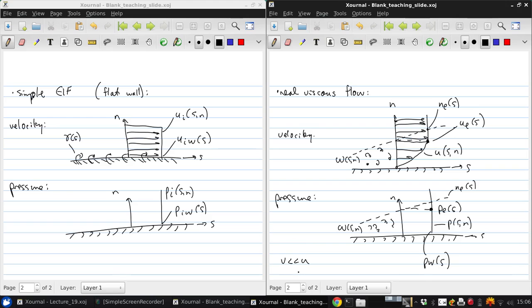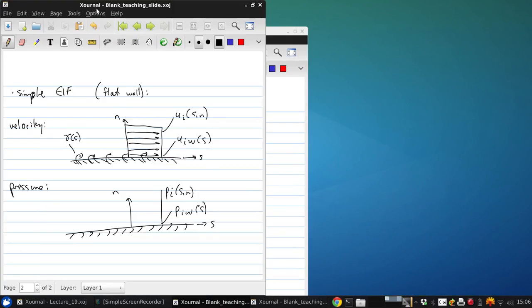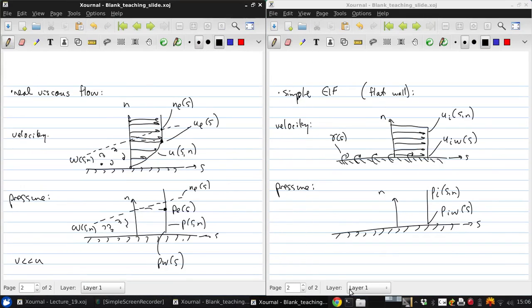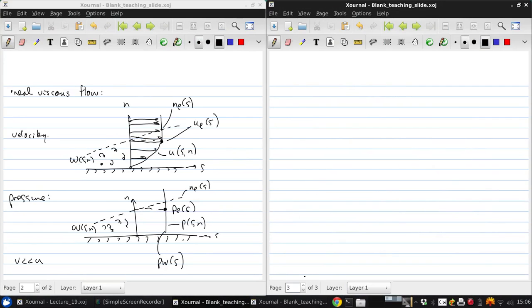This means that the streamlines are not significantly curved in the real flow. So the implication of that is that P of N must be roughly constant because if the pressure was varying, there would be streamline curvature. So this says that P W of S is essentially equal to P E of S. So the wall pressure and the edge pressure at a given S location are the same.